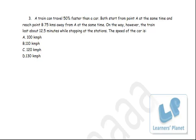In this case, a train can travel 50% faster than a car. Both start from point A at the same time and reach point B, 75 kilometers away from A, at the same time. On the way, however, the train lost about 12.5 minutes while stopping at the stations. What is the speed of the car?